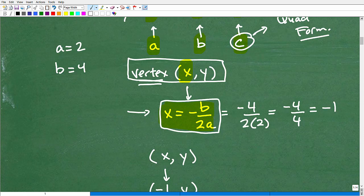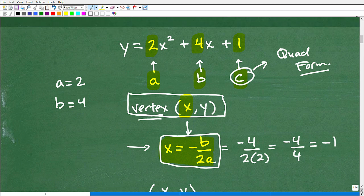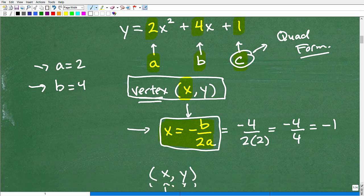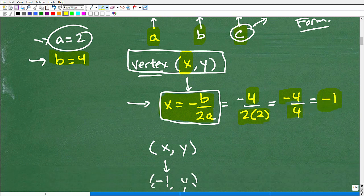Again, remember, we already defined what B is equal to. B is equal to 4, and A is equal to 2. So we're just going to plug these things in, pretty straightforward stuff. So it's going to be negative B. Again, remember, B is 4, so it's negative 4 over 2 times A. And A is what? A was 2. So this is going to be 2 times 2. So negative 4 divided by 2 times 2 is negative 4 divided by 4, which is negative 1. And guess what we just found? If you thought that was pretty easy, it is pretty easy. You just found the X coordinate of the vertex.